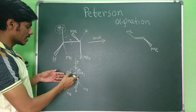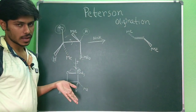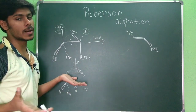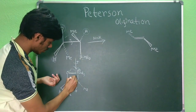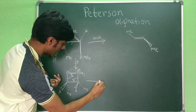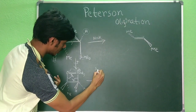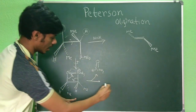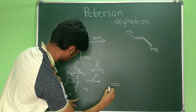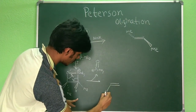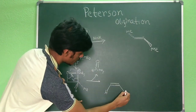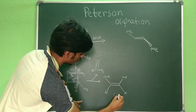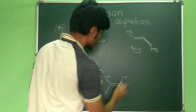After bond rotation, the O⁻ attacks the silicon to form a four-membered oxetane intermediate — analogous to the oxetane seen in the Wittig reaction. This cyclic intermediate then collapses. Because the hydrogen is also above the plane in this arrangement, it goes below the plane upon elimination, and you obtain the cis product.